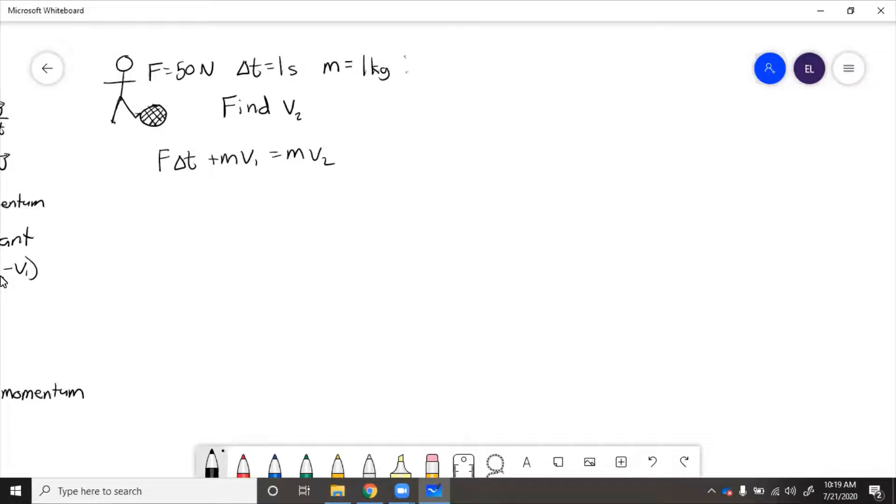Let's do it for two cases. For a, v1 equals zero, the ball is not moving. For b, the ball is moving towards him at 20 meters per second. So the negative sign means it's coming towards him.